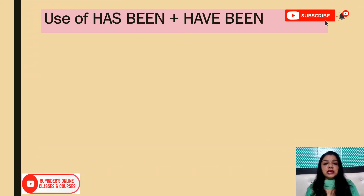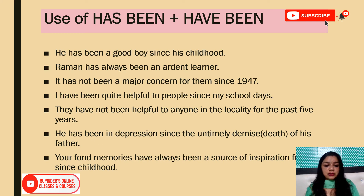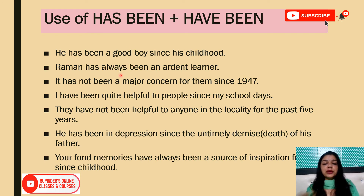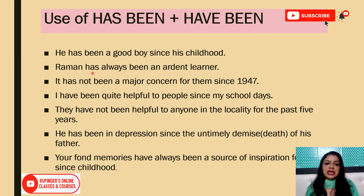Use of 'has been' and 'have been': He has been a good boy since his childhood — here no action word is used, no verb. Raman has always been an ardent learner — Raman hamesha se ek bahut hi dedicated aur devoted learner raha hai.